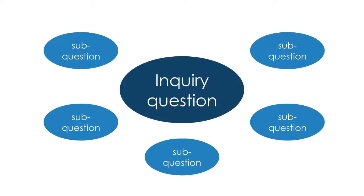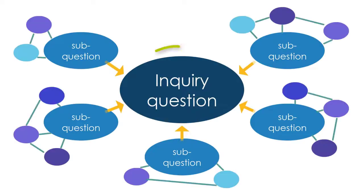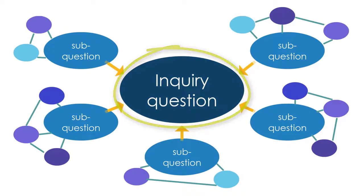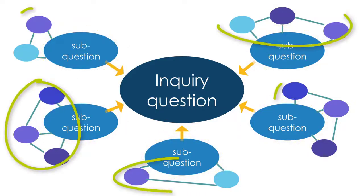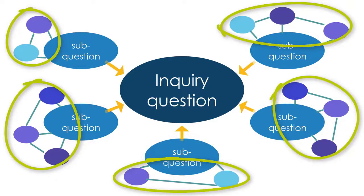You may have seen this graphic in previous workshops or online resources. The central bubble is meant to represent your overall research or inquiry question. The additional bubbles represent sub-questions. Your research is an attempt to answer each sub-question as a way to answer your central inquiry question. Finally, the smallest dots represent sources that you have found that partially answer each sub-question. We'll talk more later about the role of sources in your paper structure when we talk about rhetorical moves.